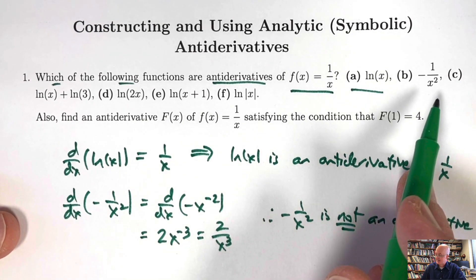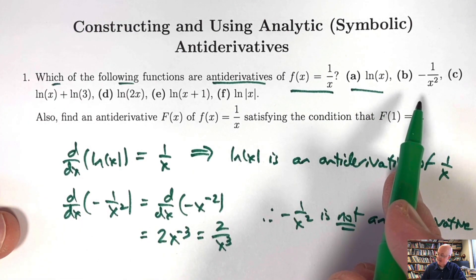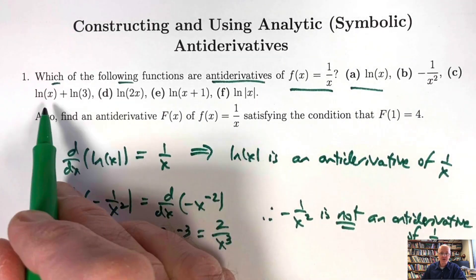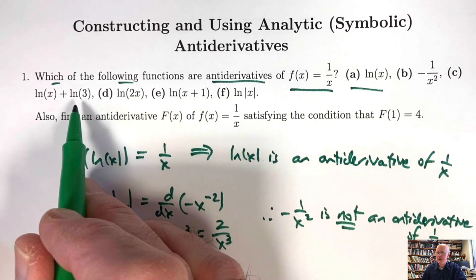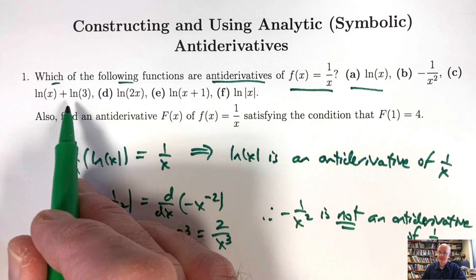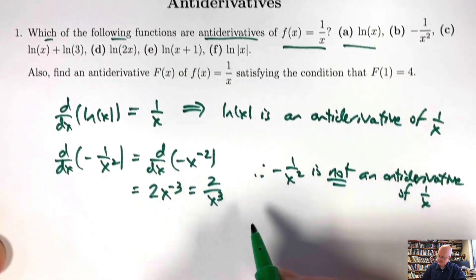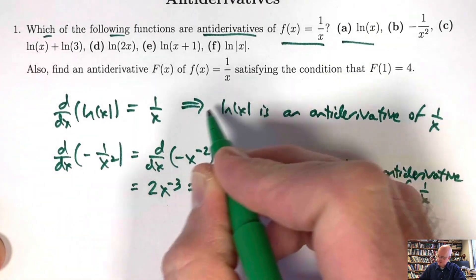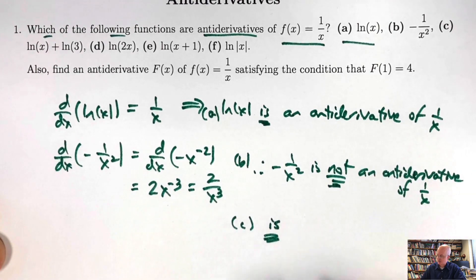The derivative of negative 1/x² is not 1/x — though the antiderivative of negative 1/x² is 1/x, which is why it might be a little confusing. Choice C is natural log of x plus natural log of 3. Natural log of 3 is a constant; its derivative is 0. So natural log of x plus ln(3) has a derivative equal to 1/x. Choice C is an antiderivative.